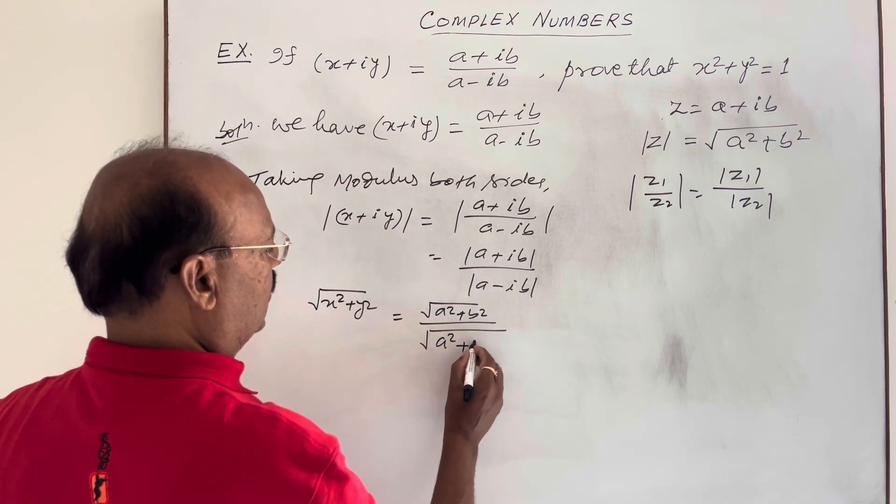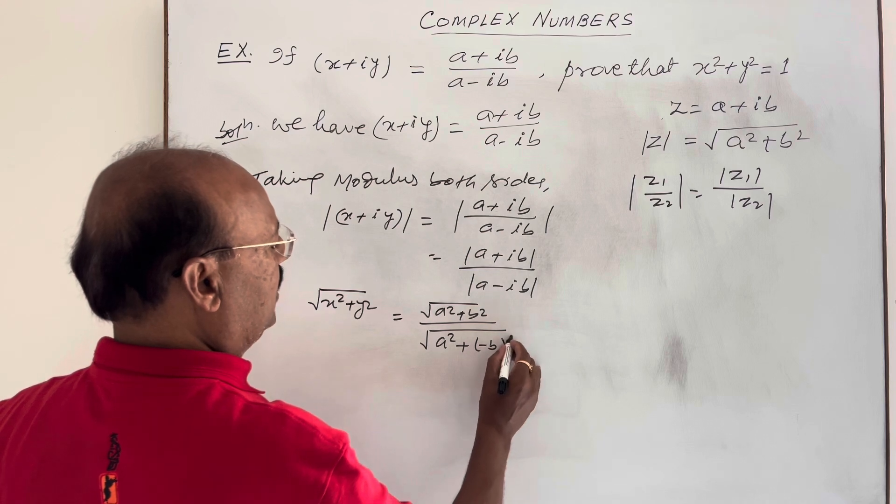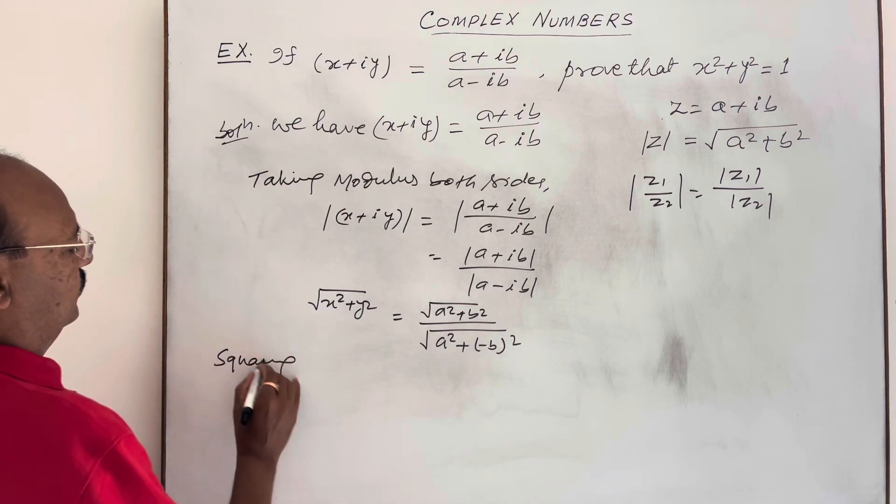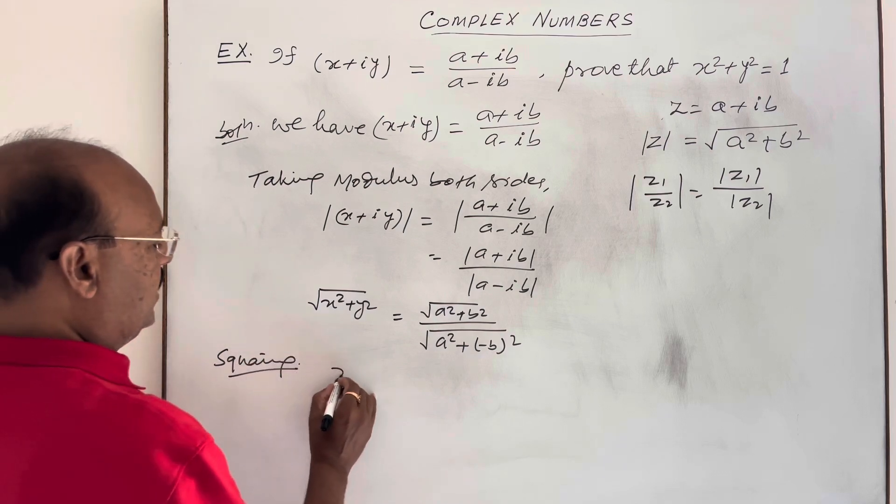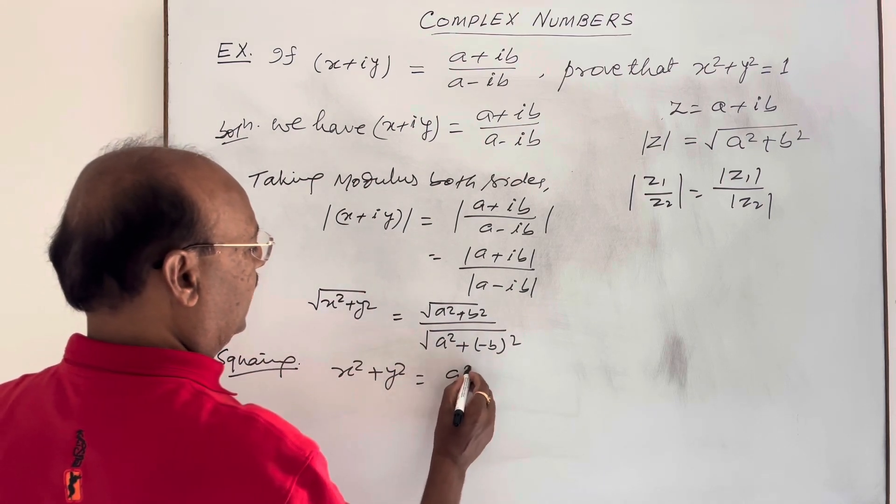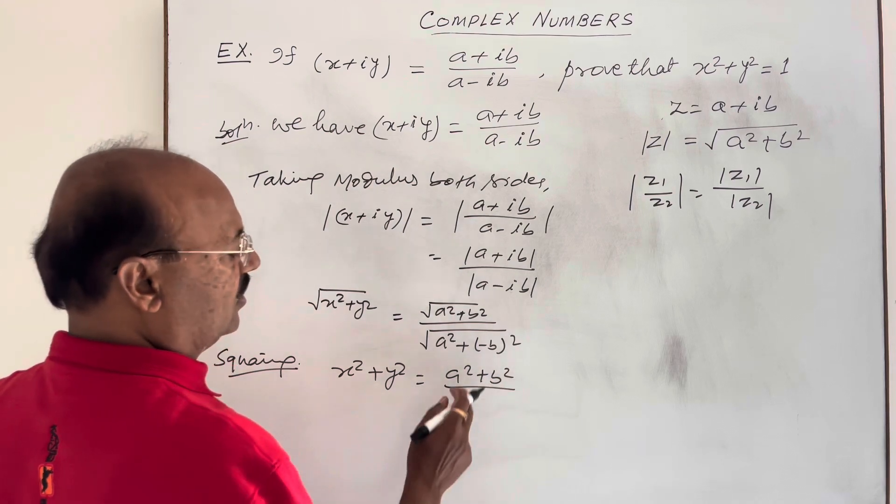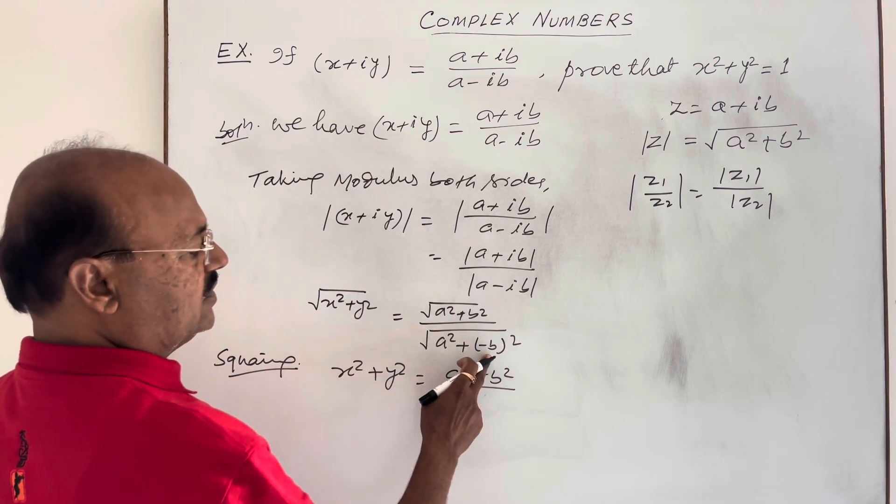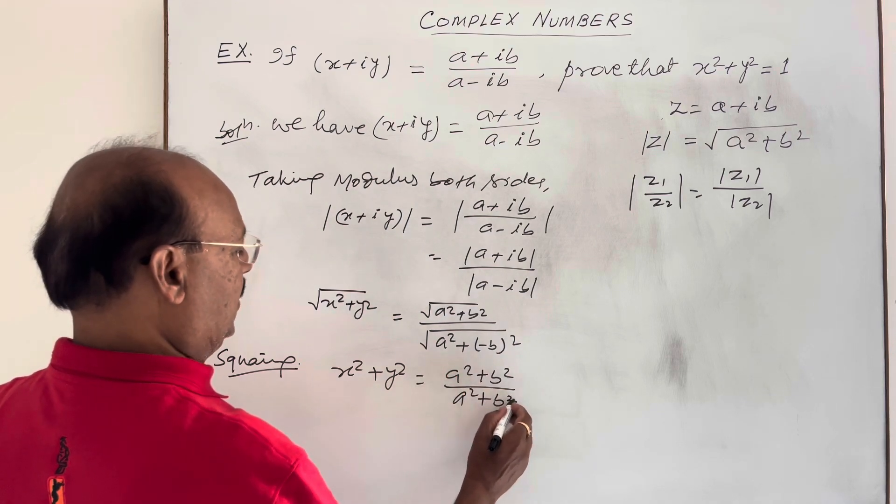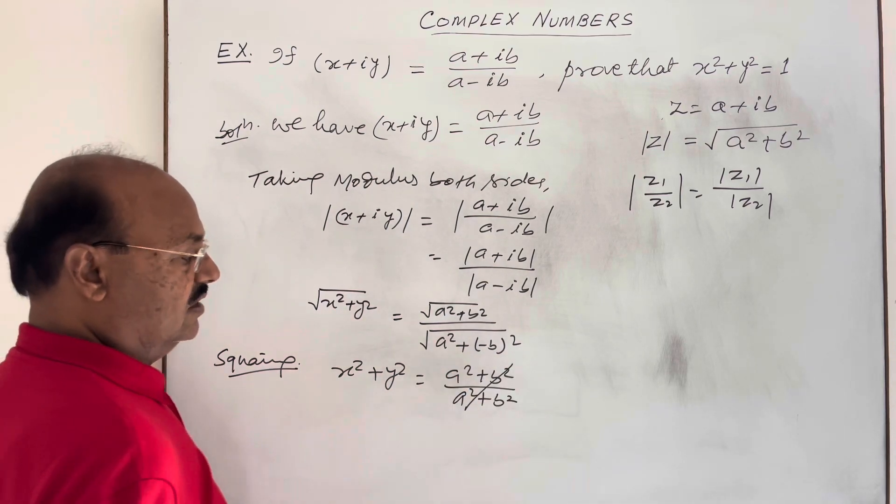Now squaring both sides we will be getting x square plus y square is equal to a square plus b square upon a square plus b square. Numerator denominator will be cancelled out.